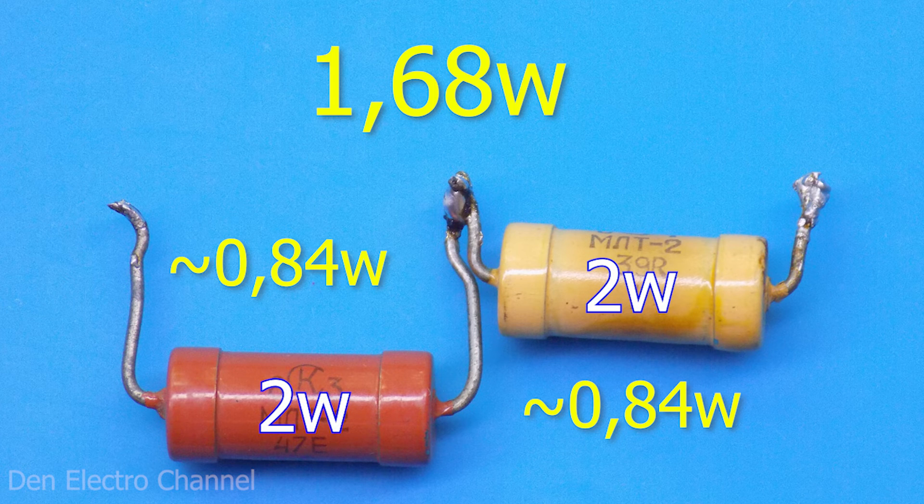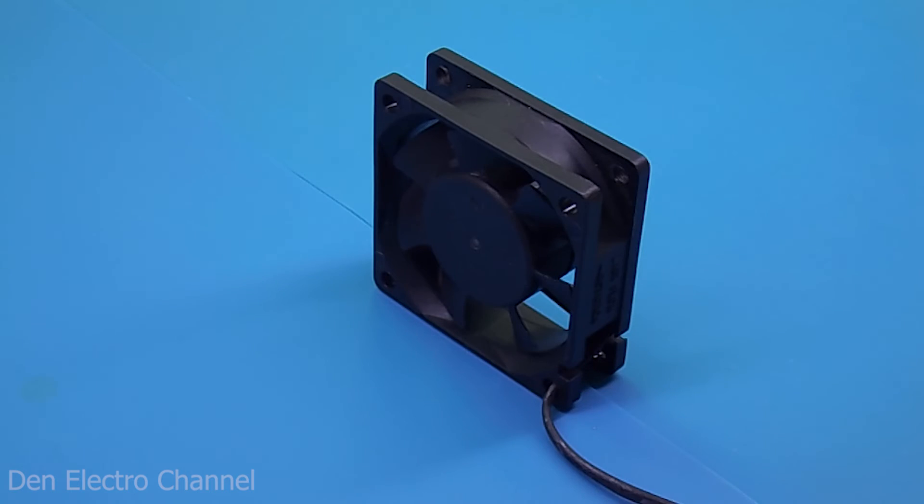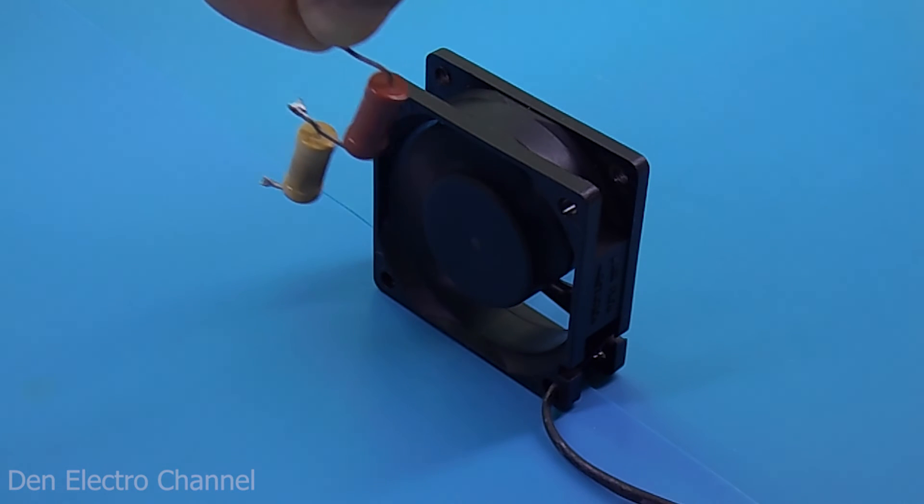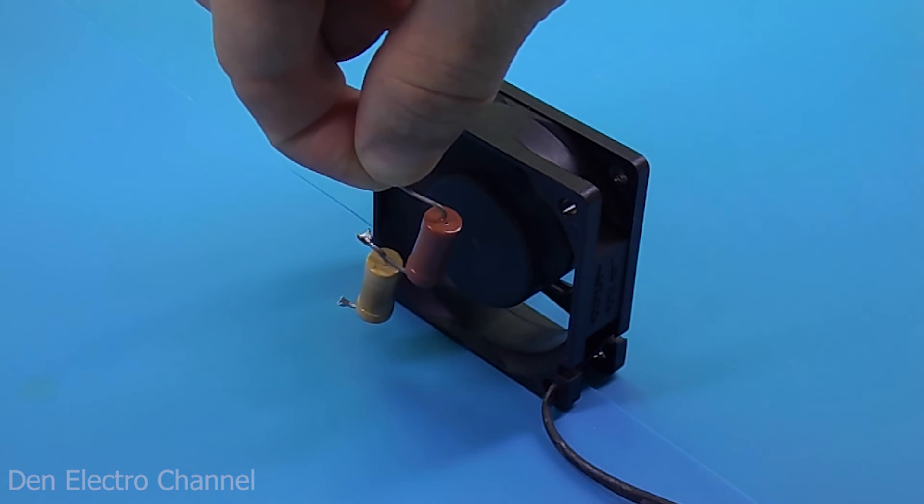Each of these resistors I used can dissipate two watts, therefore they still have a large margin against overheating. The resistors can be placed next to the fan. If the heating is not strong, then you can place it in the front on the side where the air is sucked in.